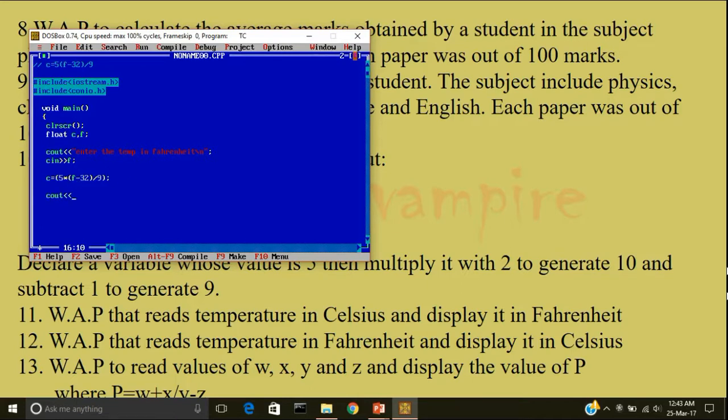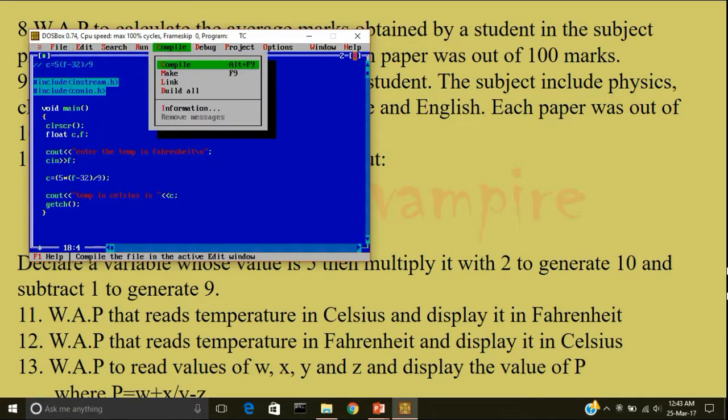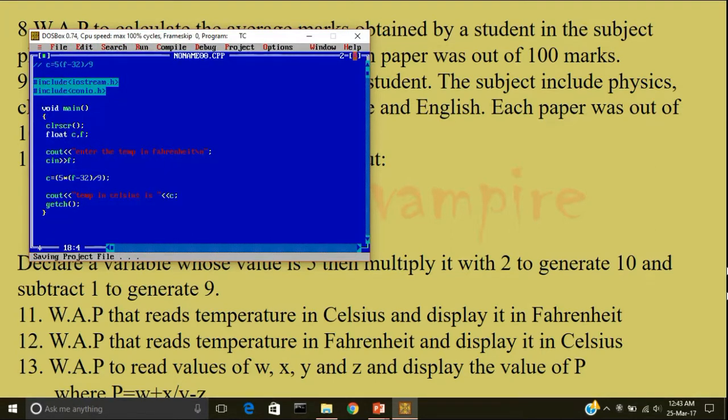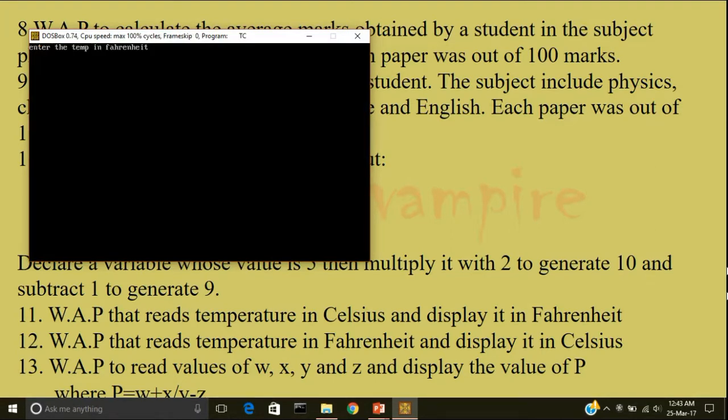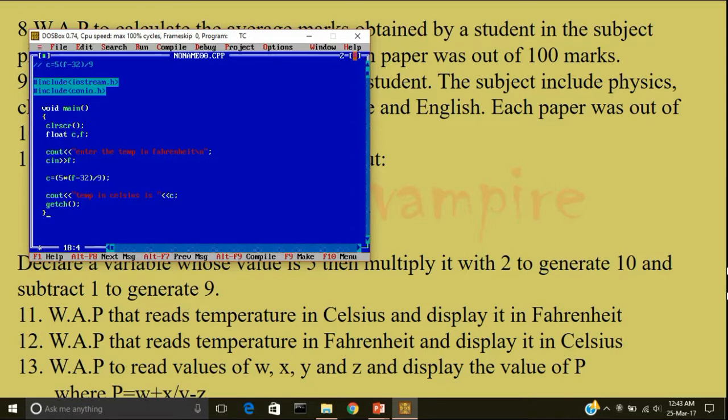I'll display the answer. Cout. Temperature in Celsius is less than less than C. Getch and close the program. I'll compile it. I'll run the program. Minus 40 degrees Fahrenheit. It is displaying minus 40. The output is correct.